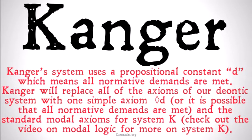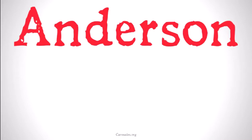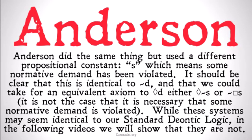We're going to focus mostly on Kanger, and we'll mention Anderson's system as well. Anderson did the same thing, but he used a different propositional constant, S, which means some normative demand has been violated. It should be clear that S is identical to not-D, and that an equivalent axiom to "it's possible that D" is either "it's possible that not-S," or "it's not the case that it's necessary that S" — that is, it's not necessary that some normative demand is violated. While these systems may seem identical to our standard Deontic Logic, in the following videos we will show they are not — but it's interesting to note they are going to be similar to each other.